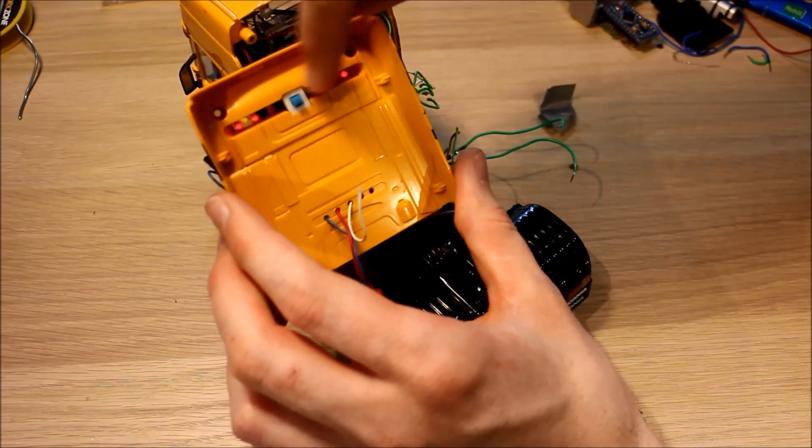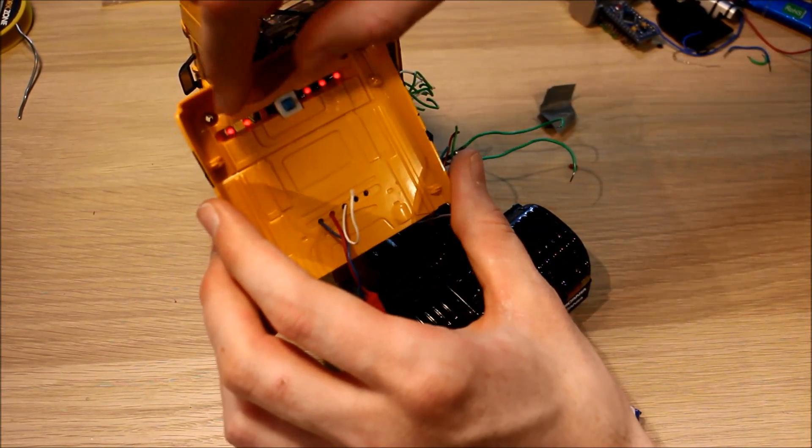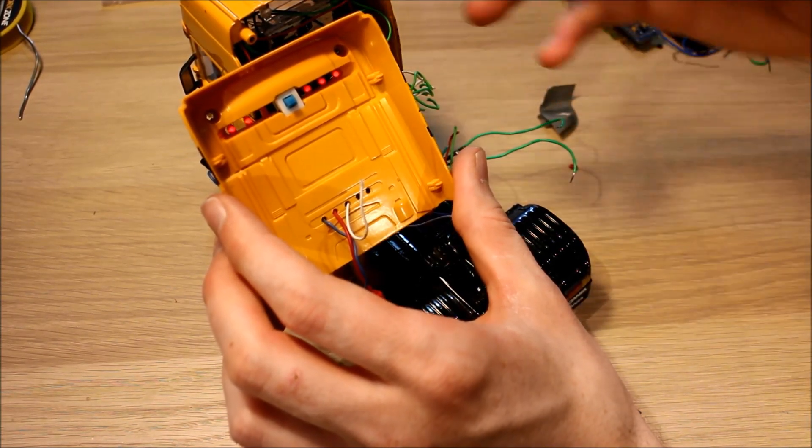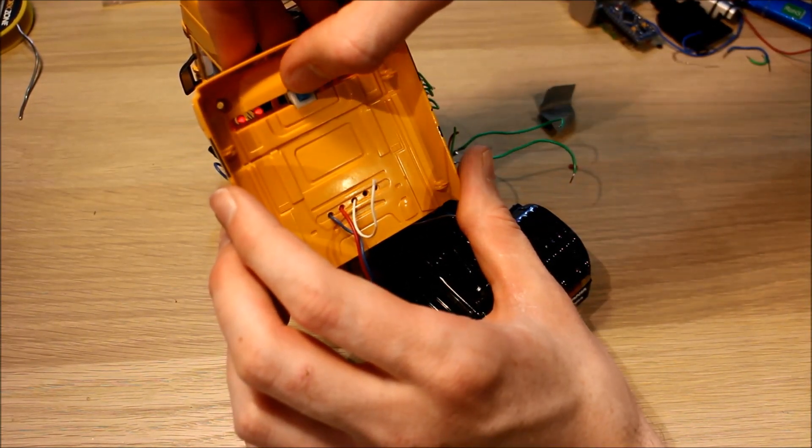So first thing we can see here is the little detail LEDs. They don't look too bad, they're probably bright enough, but all I have to do to brighten them up a little bit if I want is change the resistor, so that's not a big problem.